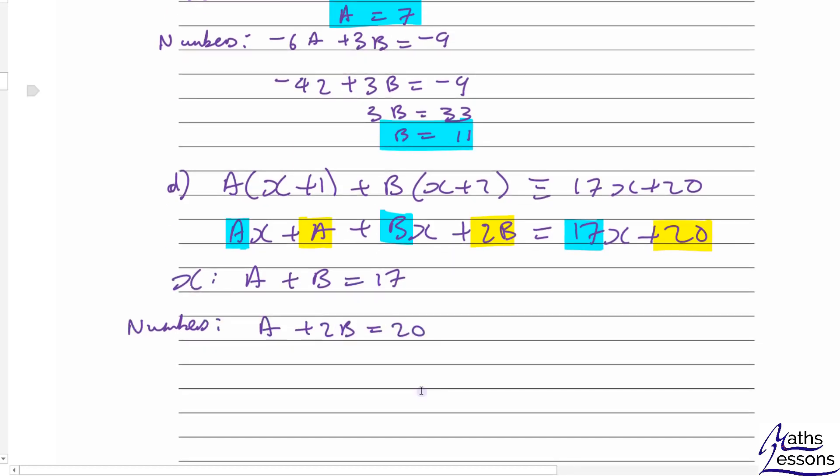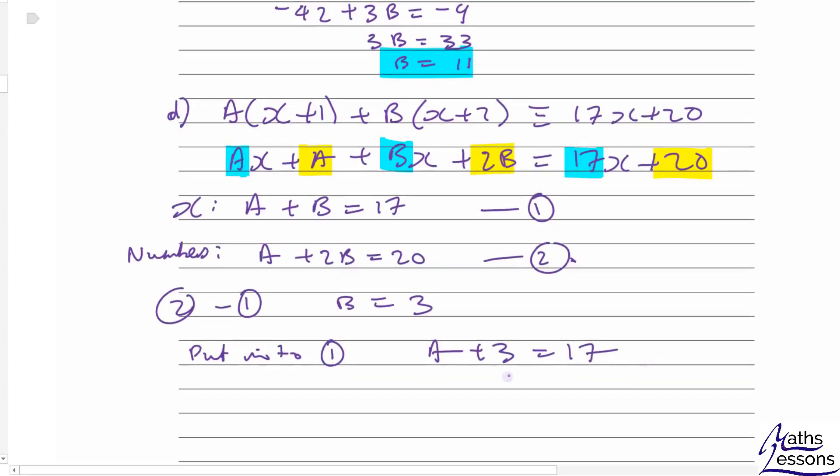So we have simultaneous equations 1 and 2. We do 2 minus 1: a minus a is 0, 2b minus b is b, 20 minus 17 is 3, so b equals 3. Put that back into 1, we get a plus 3 equals 17. Take away 3 from both sides, a must equal 14.